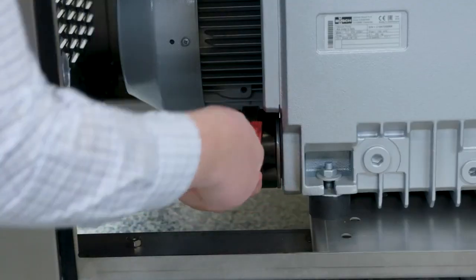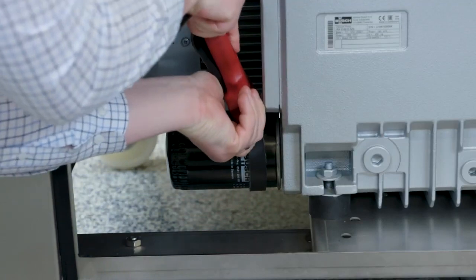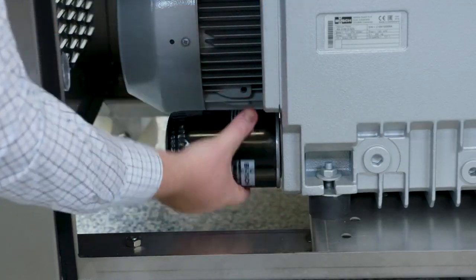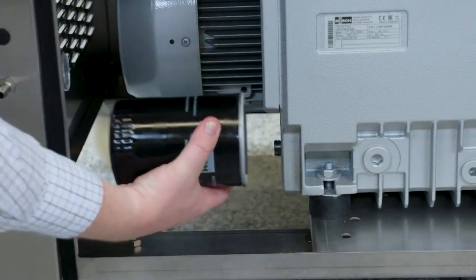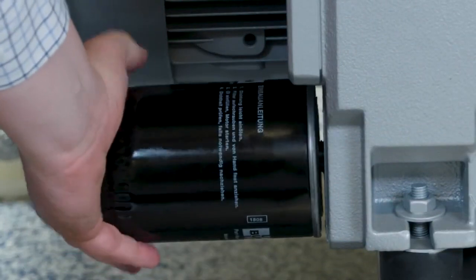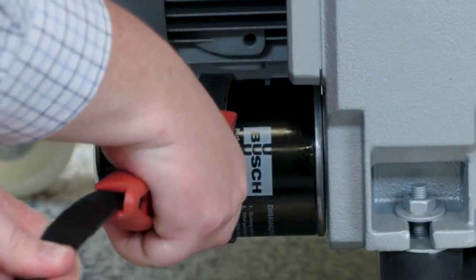The Bush vacuum pump in the Multivac C500 also includes an oil filter which cleans the oil circulating in the pump. Over time, this filter will become soiled with debris and contaminants and will need to be replaced. It is recommended to change the oil filter at the same time that the oil is changed.